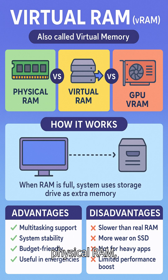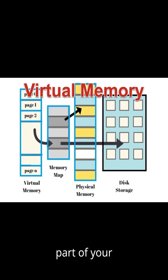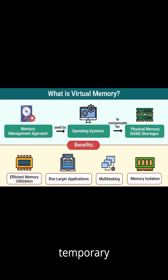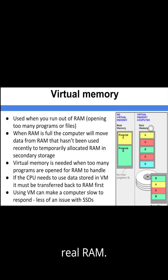When your physical RAM — system memory — is full, the system uses part of your storage drive, HDD or SSD, as extra temporary memory. This prevents crashes but is slower than real RAM.